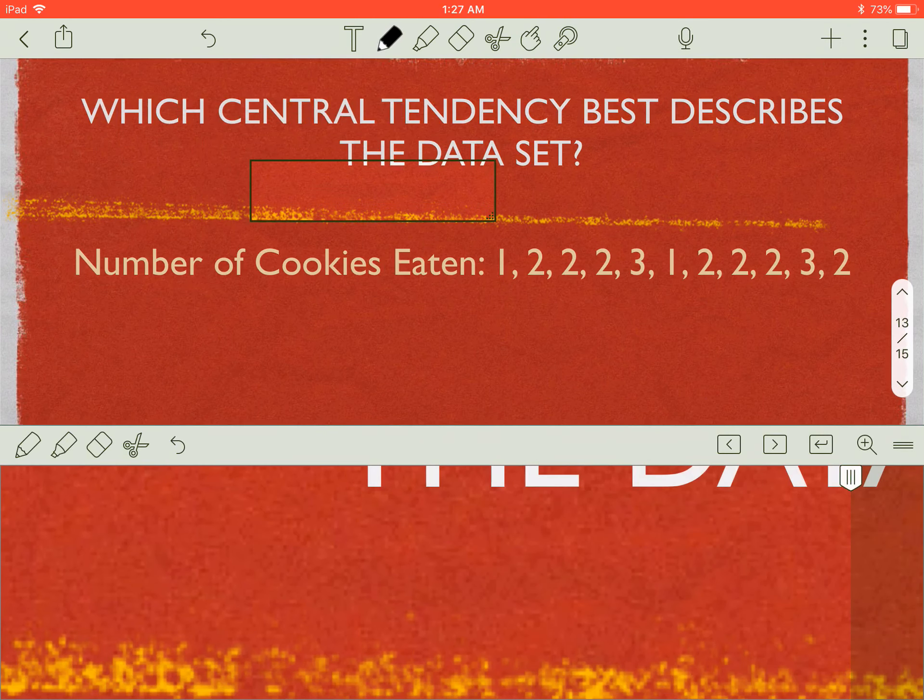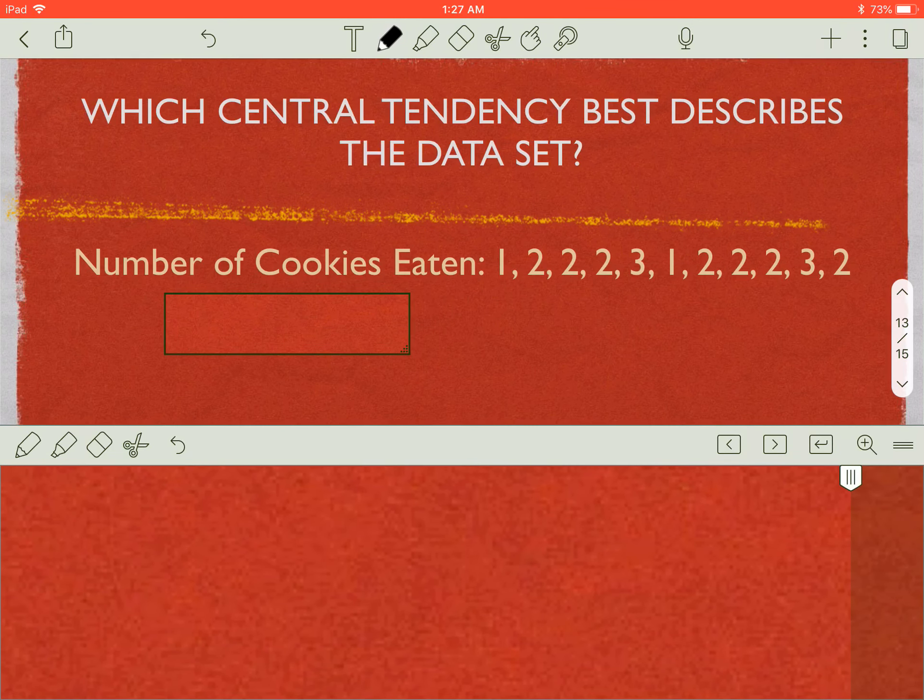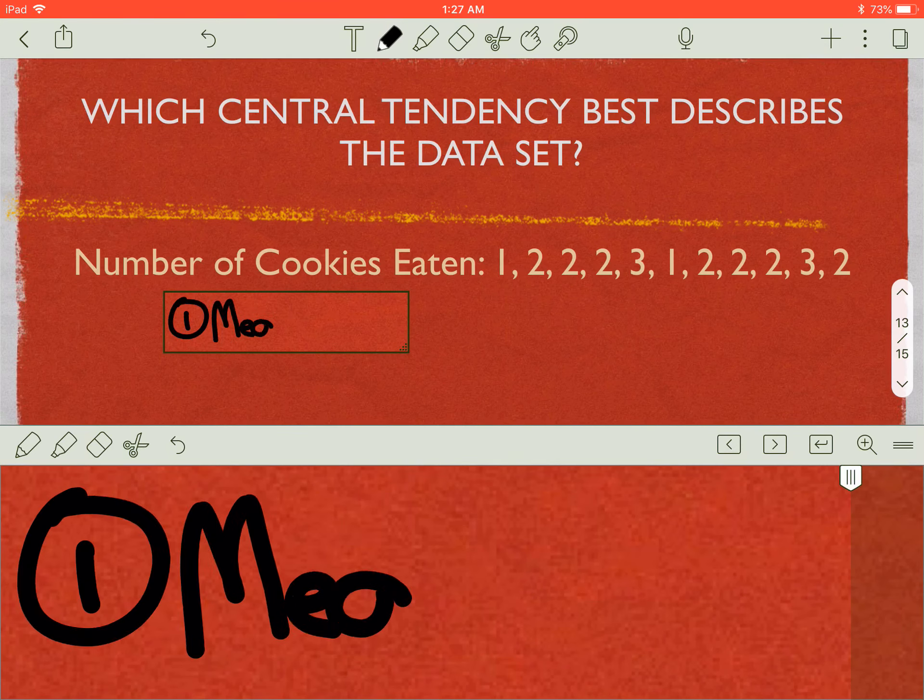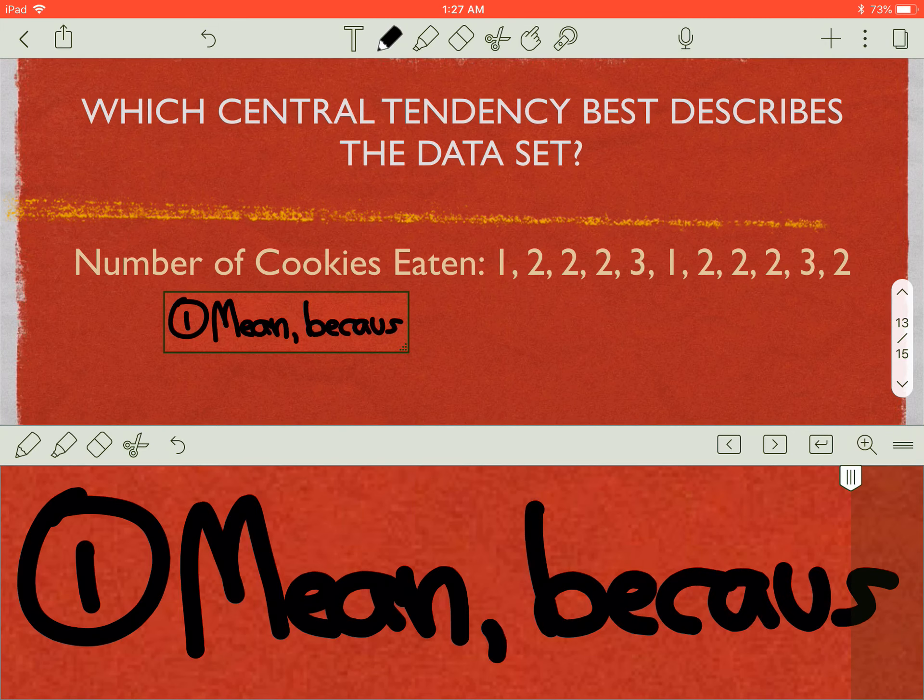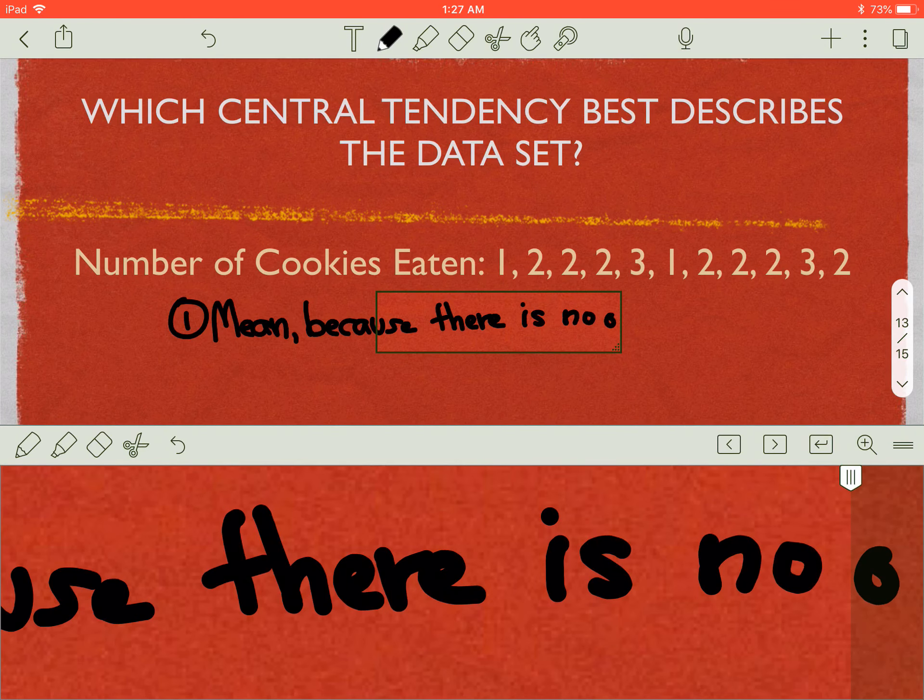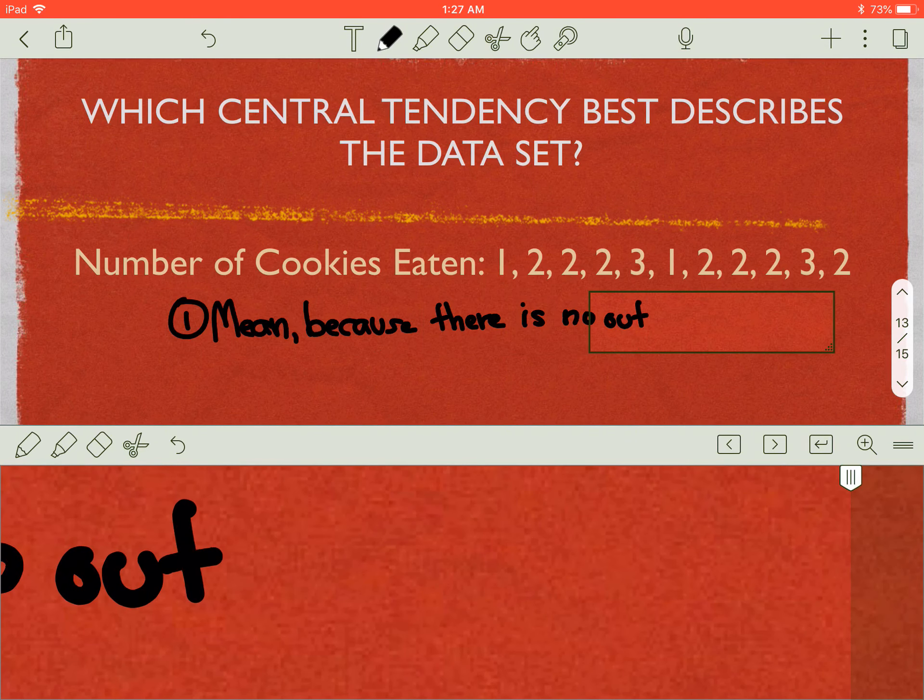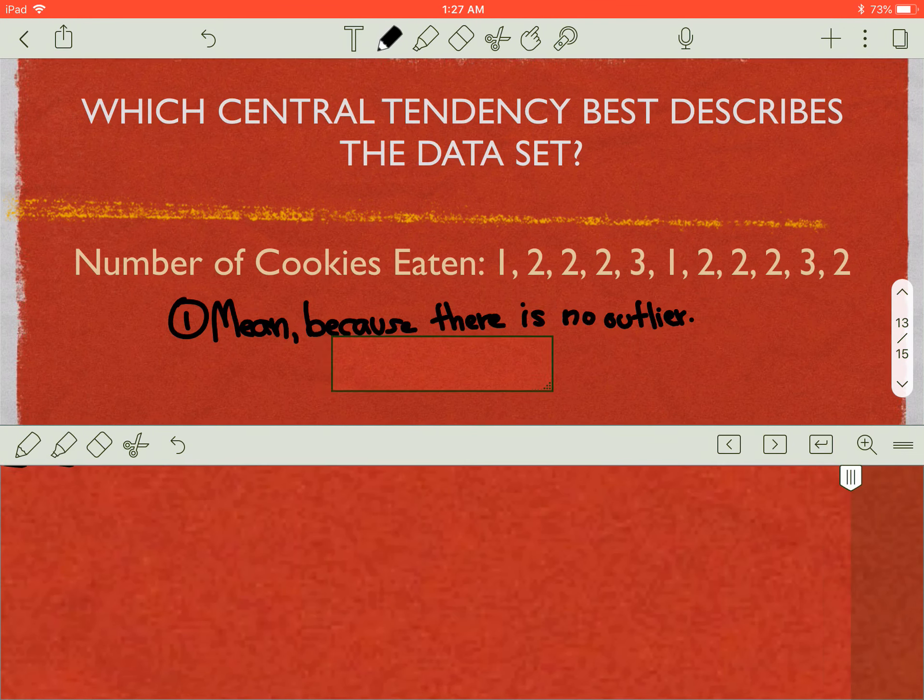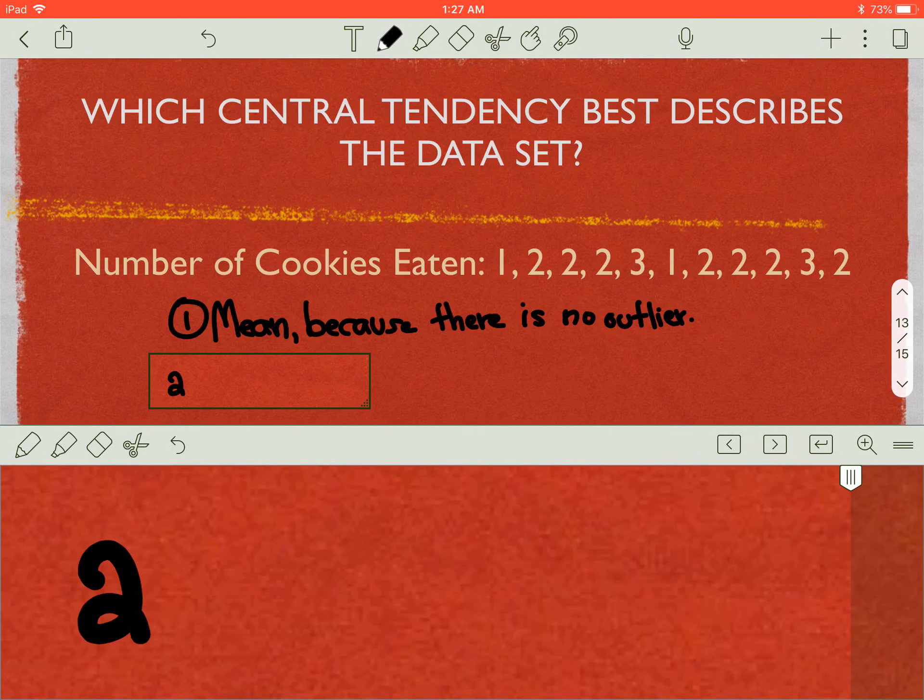So I could say, hey, one option might be the mean because there is no outlier.